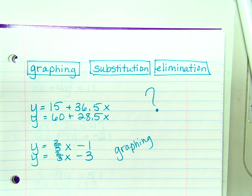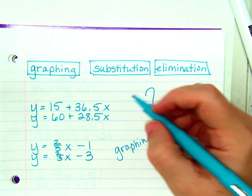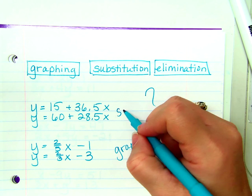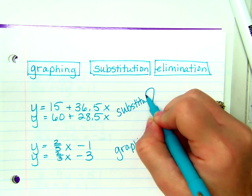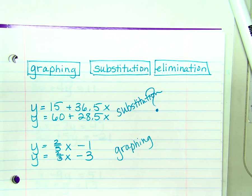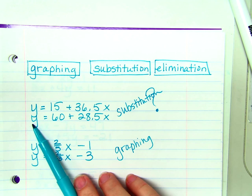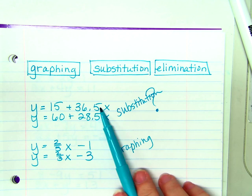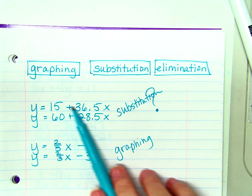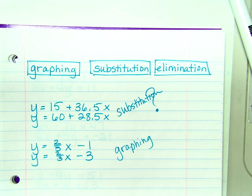So, if I had a choice and I was doing this problem, I would solve this one by substitution. Because, since they are both equal to y, if this equals y and this equals y, don't they equal each other? Does that make sense?